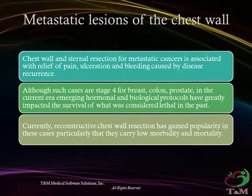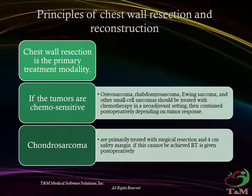Metastatic lesions of the chest wall: chest wall and sternal resection for metastatic cancer is associated with relief of pain, ulceration, and bleeding caused by disease recurrence. Although such cases are stage 4 for primaries in the breast, colon, and prostate, emerging hormonal and biological protocols have greatly impacted survival. Reconstructive chest wall resection has gained popularity in these cases, particularly as it carries low morbidity and mortality. Chest wall resection is the primary treatment modality for chest wall masses. Chemosensitive tumors like osteosarcoma, rhabdomyosarcoma, Ewing sarcoma, and other small cell sarcomas should be treated with neoadjuvant chemotherapy, then continued postoperatively depending on tumor response.